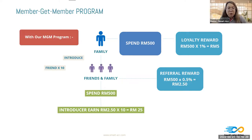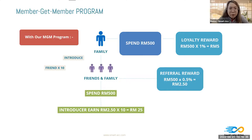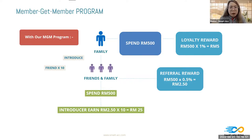This member-get-member program only operates at one layer because Bank Negara rules state that multiple layers would make it MLM. We just do member-get-member — whatever is spent by your direct downline, you can earn from it. Only one level of downline.